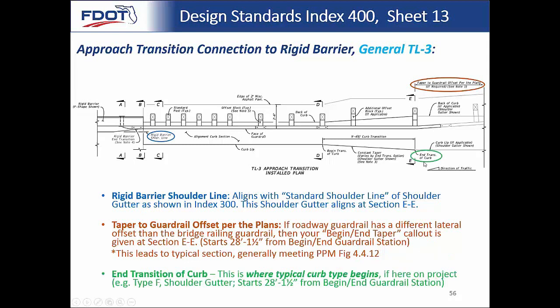At section EE, the end transition of curb also occurs. By the time you get there, either your type F curb is established, your shoulder gutter is established, or you'd have no curb at all. There are multiple options for that, all shown on Sheet 15.